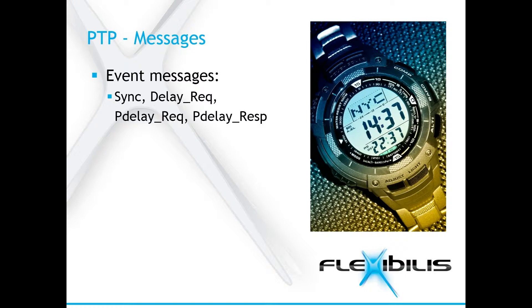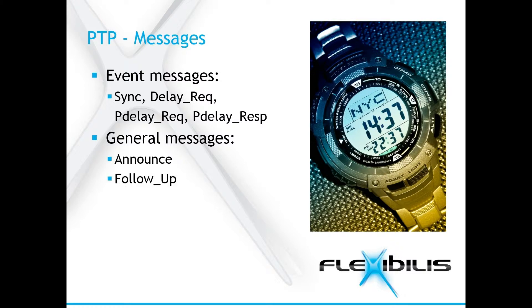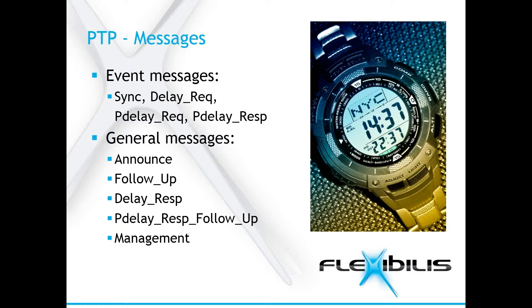Then there are six different general messages. Announce message is sent by the master and it is used to establish the synchronization hierarchy. Follow-up, delay response, and peer delay response follow-up are used to send timestamps and provide information for calculating the path delay. They are explained in more depth later. Management messages communicate information and commands that are used when managing clocks. Signaling messages are communication between the clocks.